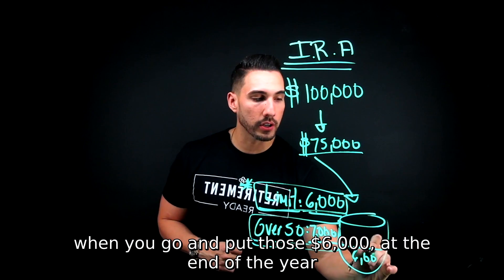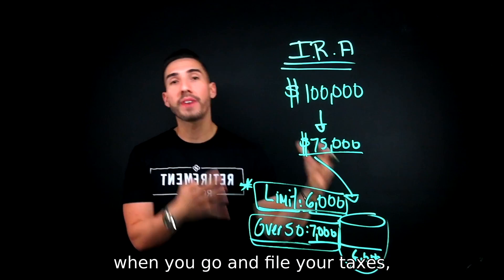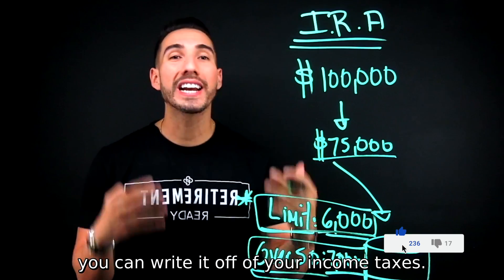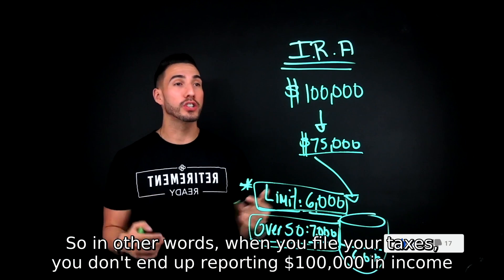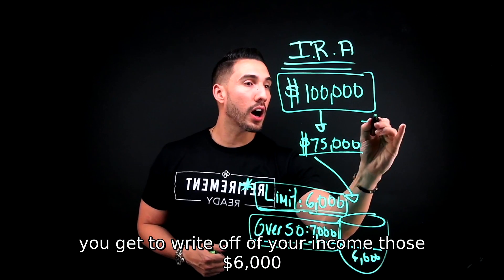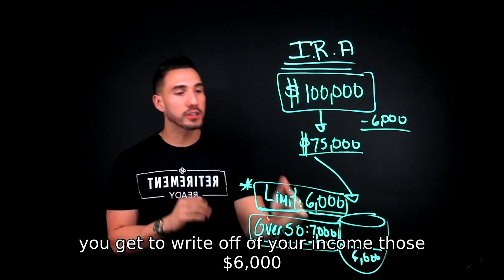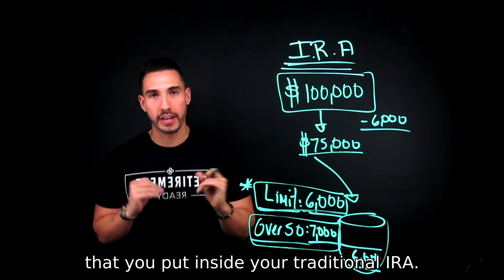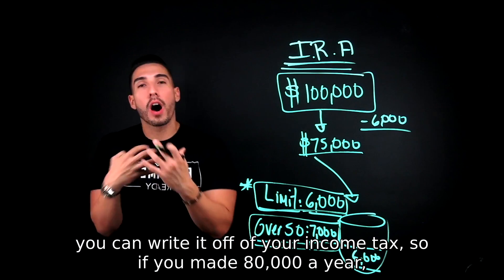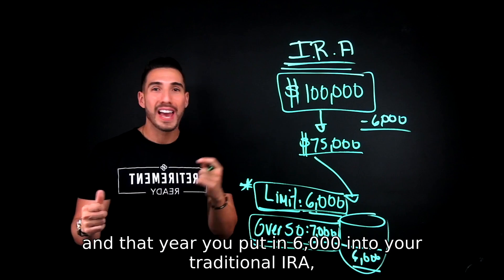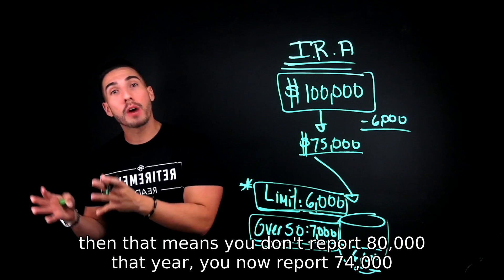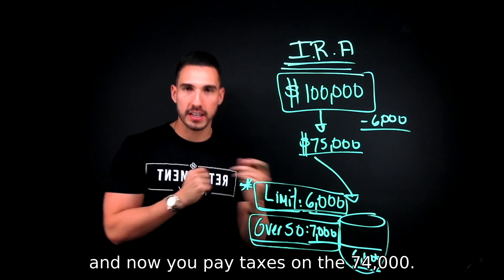Let's say you're in your forties and you put in $6,000 into your traditional IRA. When you go and file your taxes at the end of the year, the beautiful thing about a traditional IRA is that all of the money you put in there you can write off your income tax. So instead of reporting $100,000 in income, you write off those $6,000. If you made $80,000 and put in $6,000, you now report $74,000 and pay taxes on that amount.